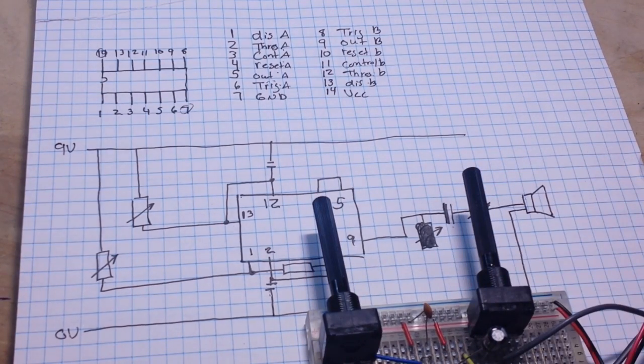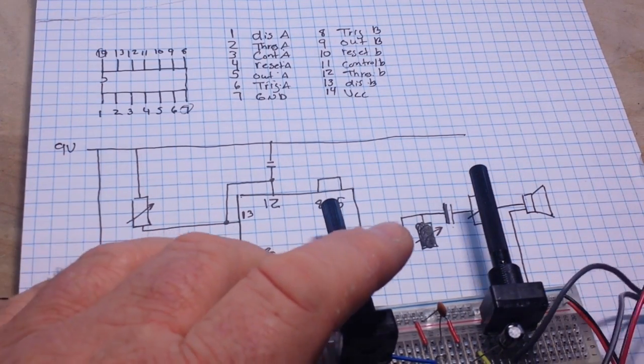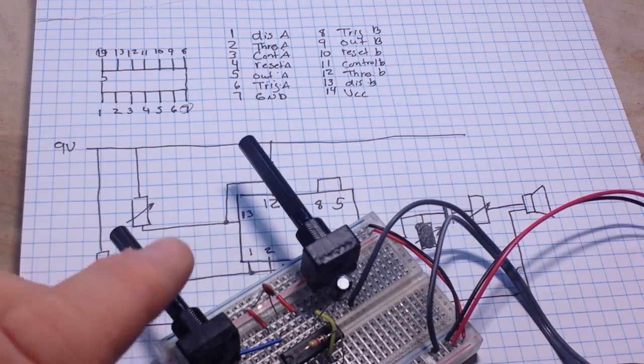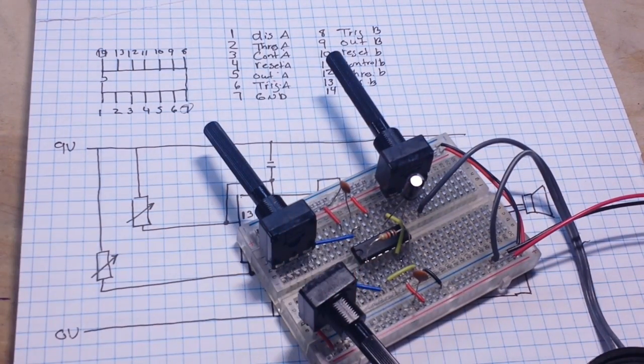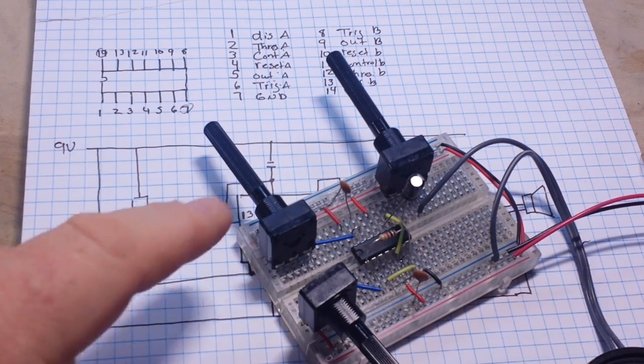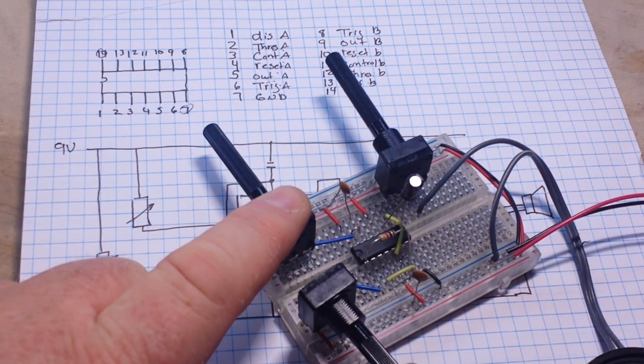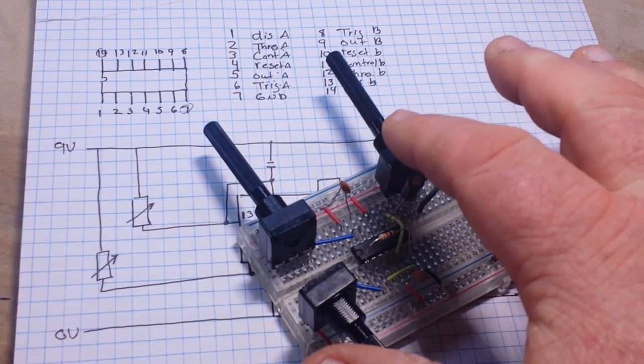So, you can see it is really a simple circuit here. These are our two control potentiometers. This one controls the frequency, this one controls the pulse width, and this is our volume.